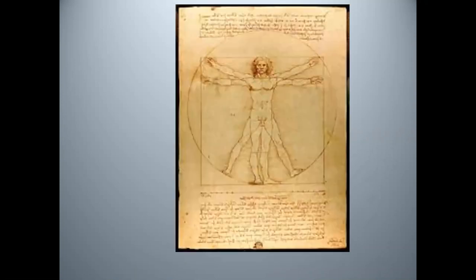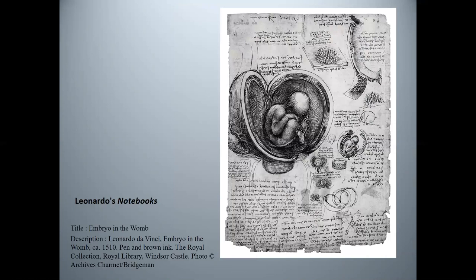Leonardo recorded his observations and drawings in his notebooks, which he penned in mirror writing. This is Vitruvian Man, a sketch of a human man inscribed in a circle and a square. Da Vinci believed there was a divine connection between the proportions of the human body and the universe. Leonardo's dissections and drawings of the human body led to discoveries about anatomy, including the ventricles of the heart and the placement of the fetus in the uterus.